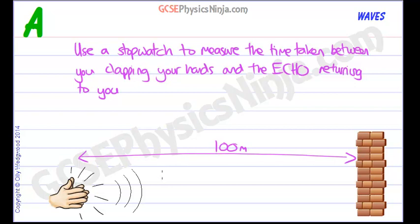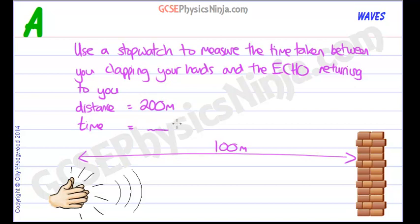How far have the sound waves travelled when you stop your stop clock? The distance travelled would be two hundred metres, because it's there and back again — that's the key thing to watch out for in these questions. The time is as measured on your stop clock, and the speed equation is distance divided by time, giving speed in metres per second.